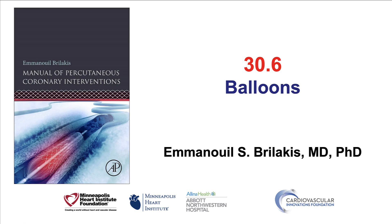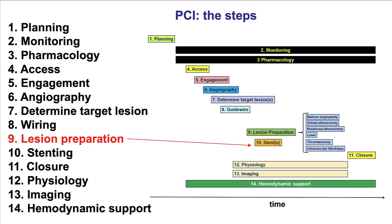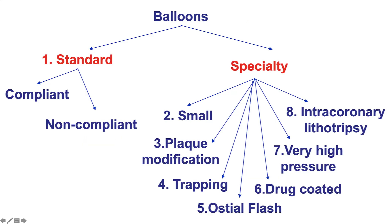Hi, this is Manos Brilakis from the Minneapolis Heart Institute and the Cardiovascular Innovations Foundation, presenting video 30.6 for the Manual of Percutaneous Coronary Interventions. This is on balloons. Lesion preparation is the ninth of the 14 steps of Percutaneous Coronary Intervention, and it is a critical step in most lesions, as it facilitates stent delivery and stent expansion. Balloon is the most commonly used and easiest form of lesion preparation.